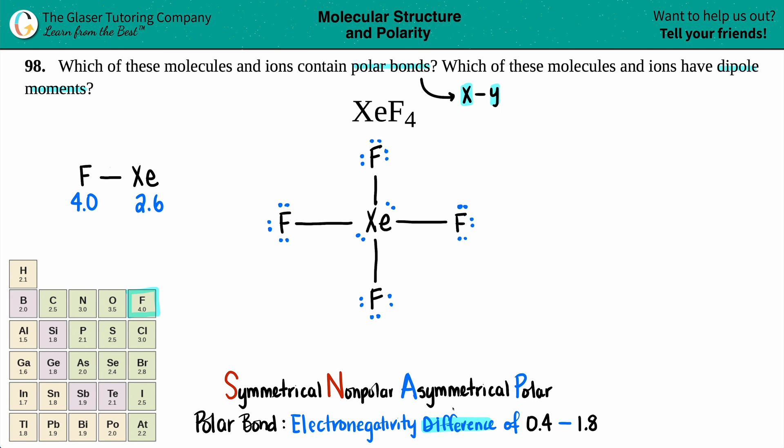Now we want to take the difference, that just means subtraction. So electronegativity differences should always be positive. So always take the higher number and minus the lower number. So 4.0 minus 2.6, I get 1.4. And now you say to yourself, is this in the realm of what a polar bond is? And yeah, it's between 0.4 and 1.8. So you definitely have polar bonds. So those electrons in the bond are not evenly split. They are more favored towards fluorine because fluorine is more electronegative.